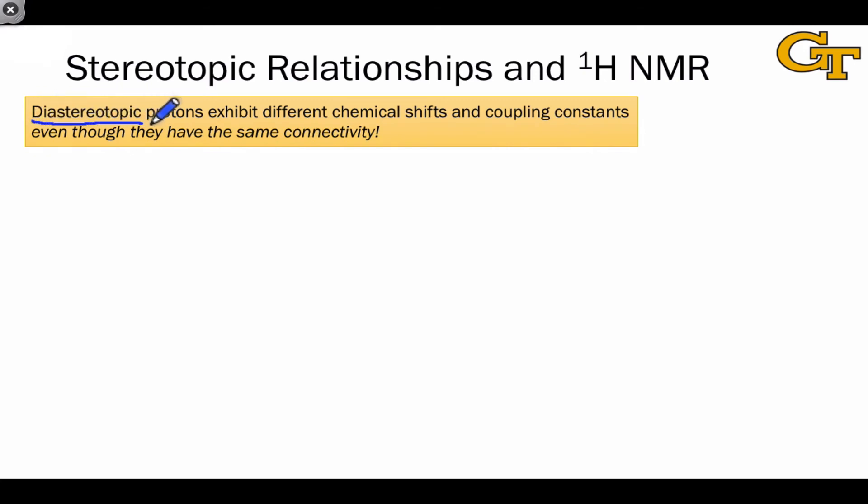Diastereotopic protons are distinguishable even by achiral molecules and phenomena, and so they will exhibit different chemical shifts. Since from the perspective of even achiral radio waves in an NMR experiment, they're in different chemical environments even though they have the same connectivity.